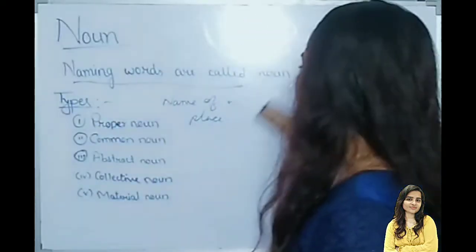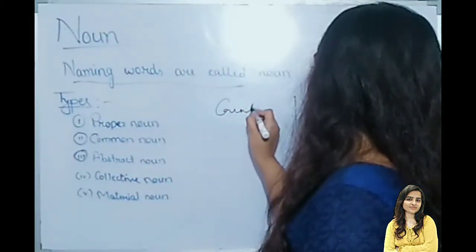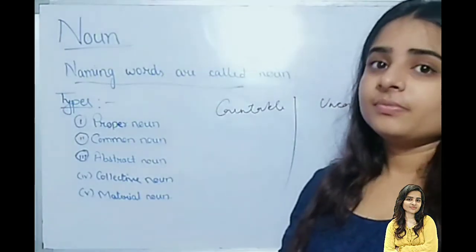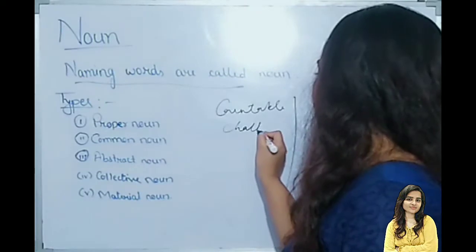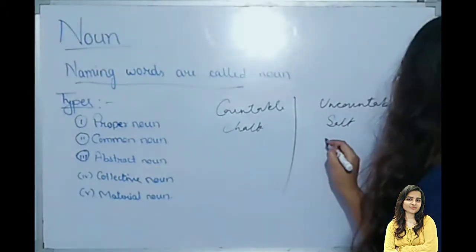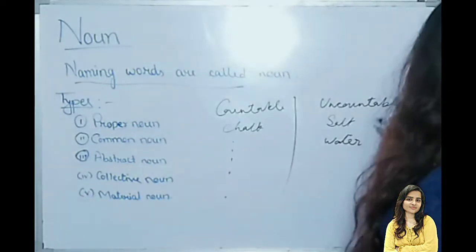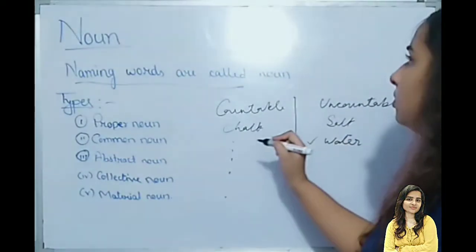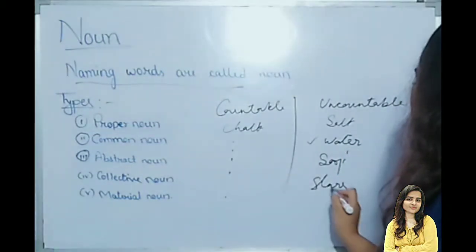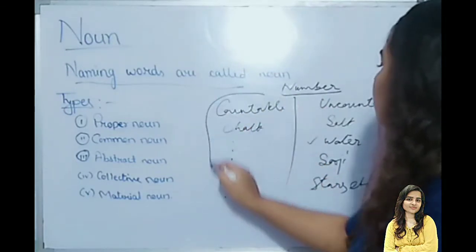So let's first see the types of nouns. On the basis of number, there are two types of nouns. One is countable and one is uncountable. What can we count? For example, chalk — you can count chalk. What can't we count? Salt — salt can't be counted. Water can't be counted. Countable nouns are things you can count by number, and uncountable are things like liquids, sugar, stars, et cetera. So on the basis of number: countable and uncountable.